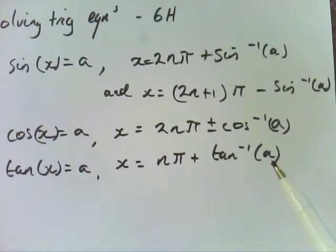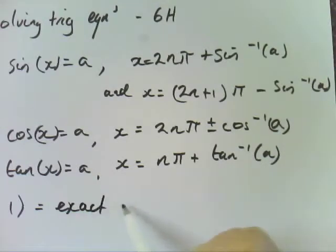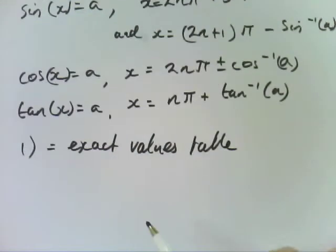All the stuff you've learned about the unit circle still applies. If it's in the first quadrant, you just find the angle. If it's in the second quadrant, you can work out whether it's positive or negative. All that same stuff still applies, but this time we're using these rules here. Let's do a couple of examples. I don't want to do one because it's just exact values tables. Question one, you just do exact values table. Let's start with question two.